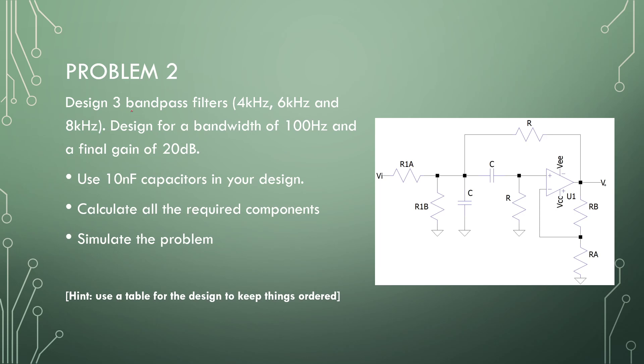So problem two, design three bandpass filters: 4 kHz, 6 kHz, and 8 kHz, designed with a bandwidth of 100 Hz and a final gain of 20 dB. Use 10 nF caps, calculate the required components and simulate the problem. Use the table to order these designs and do them all three basically at the same time. Tabulate everything that you are doing. So I'm going to give you a couple of moments, pause the video, and when you're finished we can go on to the solution.